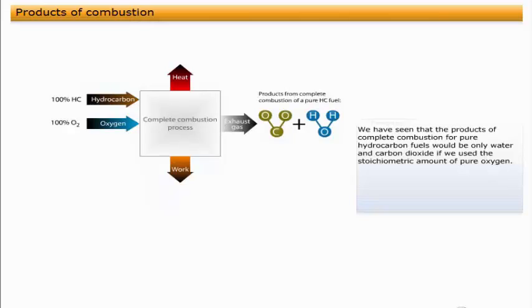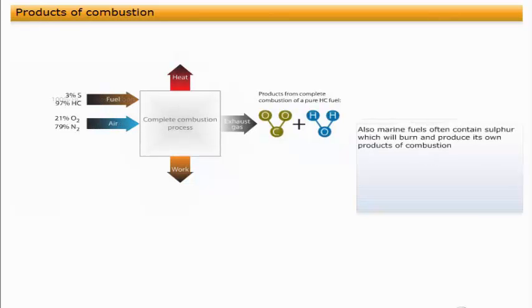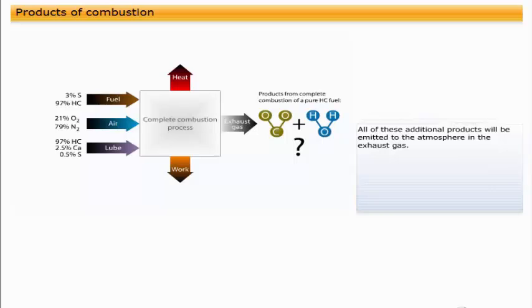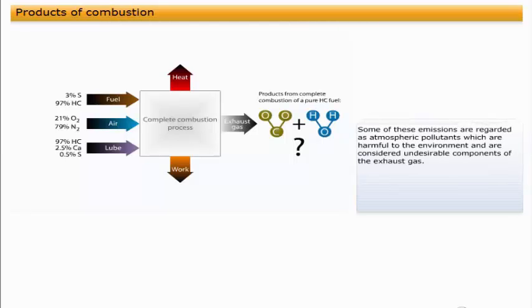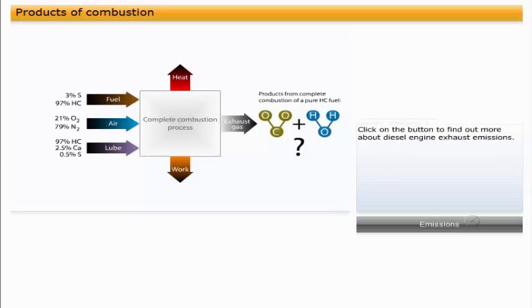We have seen that the products of complete combustion for pure hydrocarbon fuels would be only water and carbon dioxide if we used the stoichiometric amount of pure oxygen. However, the combustion process is not supplied with oxygen directly, but with atmospheric air, which contains a high proportion of nitrogen as well as other trace elements. Also, marine fuels often contain sulfur, which will burn and produce its own products of combustion. Obviously, any other elements that are present in the fuel and any excess lubricating oil will produce other products of combustion. All of these additional products will be emitted to the atmosphere in the exhaust gas. Some of these emissions are regarded as atmospheric pollutants, which are harmful to the environment and are considered undesirable components of the exhaust gas. Recent legislation, particularly the introduction of MARPOL Annex 6, regulates the permitted levels of these undesirable components in exhaust gas emissions.